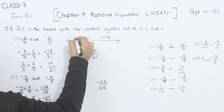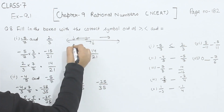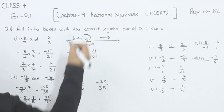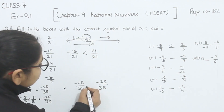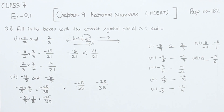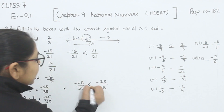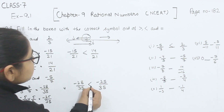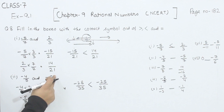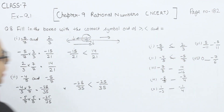Minus 25 is closer to 0 and minus 28 is farther from 0, so minus 25 by 35 is greater. In negative numbers, if the absolute value of the number is smaller, then it is the bigger number, and if the absolute value is bigger, then it is the smaller number. So 28 is bigger in absolute value, meaning minus 25 by 35 — which represents minus 5 by 7 — is the greater one.